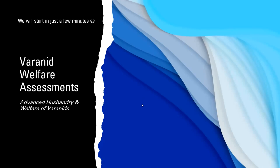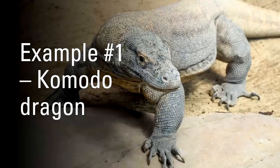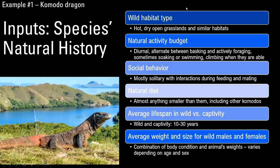One commonly kept species are Komodos. I wanted to create particular situations and give examples of how you would set up welfare assessments and the information you would need. Part of the welfare inputs that is important for basing housing decisions is the natural history of the species. This would just be an example of Komodo dragons as a species — some information on them and on individuals and subgenera.